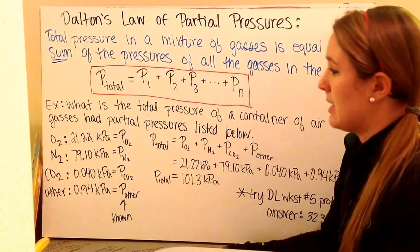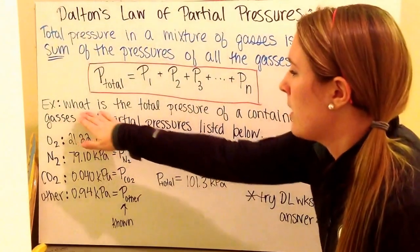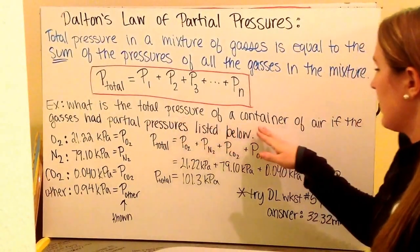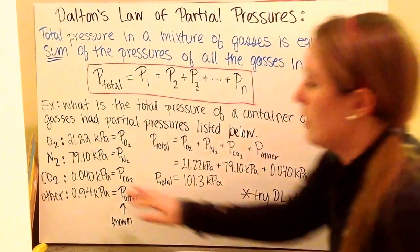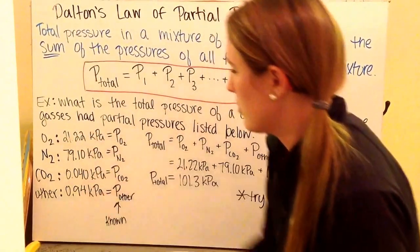So let's go through an example. I want to know what is the total pressure of a container of air if the gases have partial pressures listed below. So over to the left, I have my partial pressures listed.